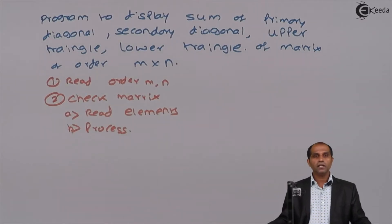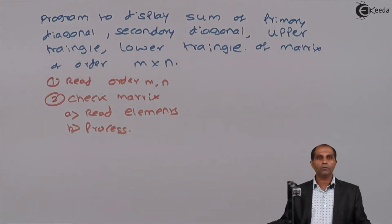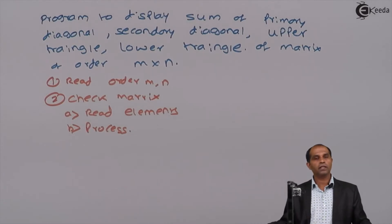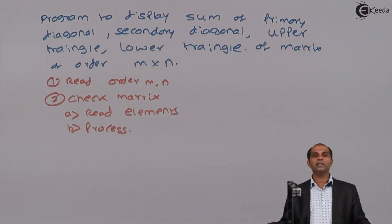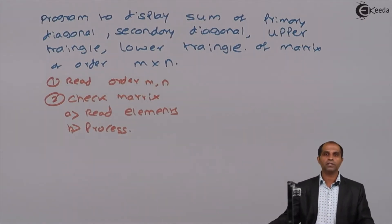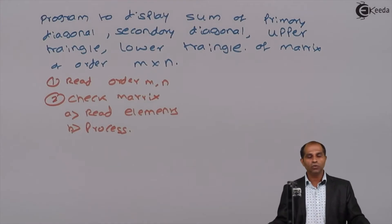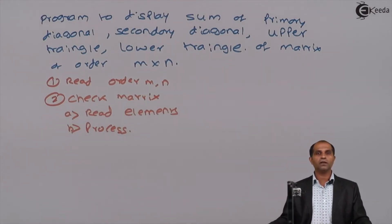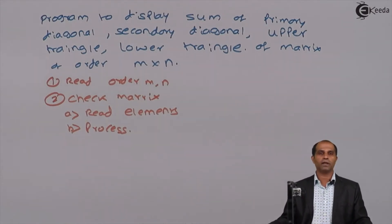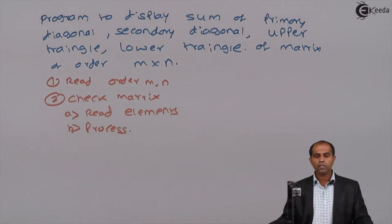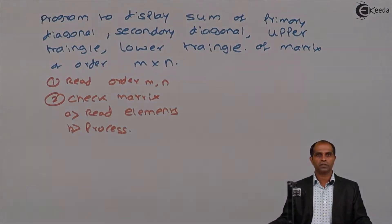Hello friends. Let's deal with one important program on a two-dimensional array based on a single matrix. We will now find the diagonal sums and the two triangles which lie on a single matrix — that is the upper triangle and lower triangle of a matrix. Now all these are possible only when the matrix is a square matrix.